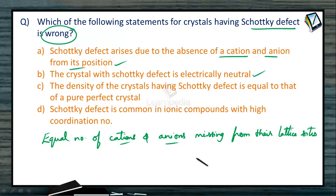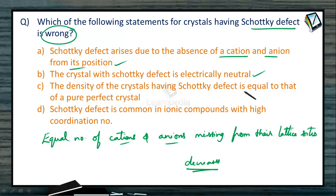As some particles are missing from the lattice sites, it definitely affects the density of the crystal. When some particles are missing, the density decreases. But what is given here? The density of crystals having Schottky defect is equal to that of a pure perfect crystal. So this is a wrong statement, and that becomes our correct answer.